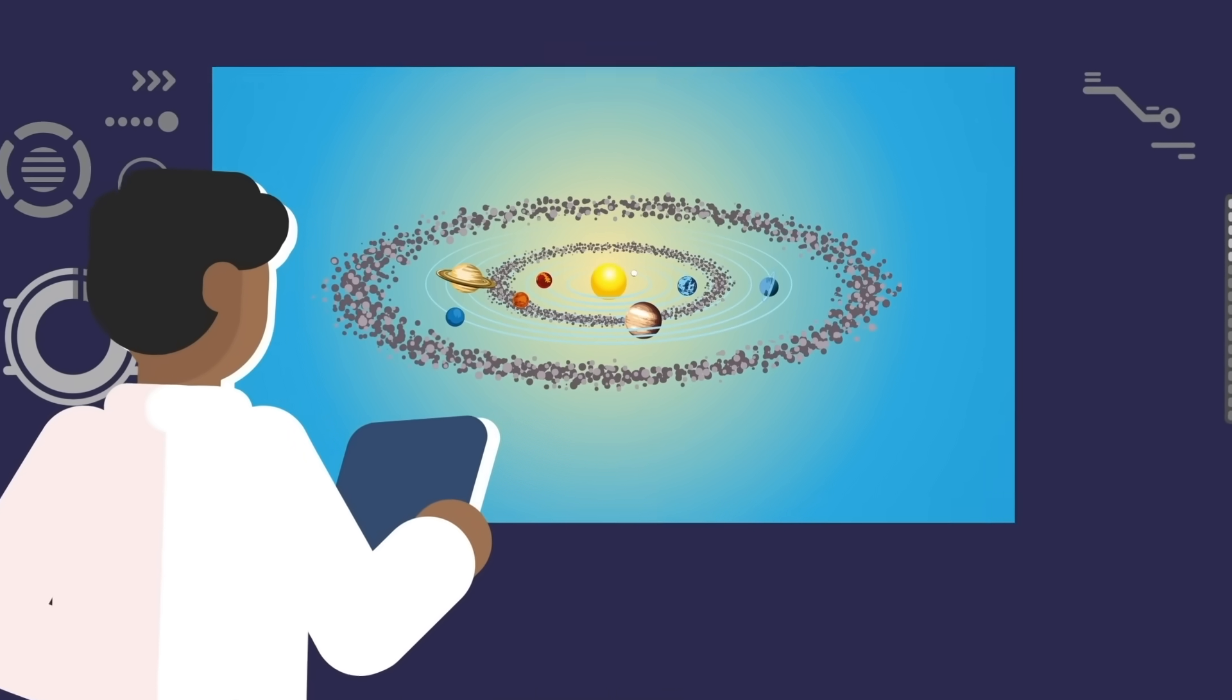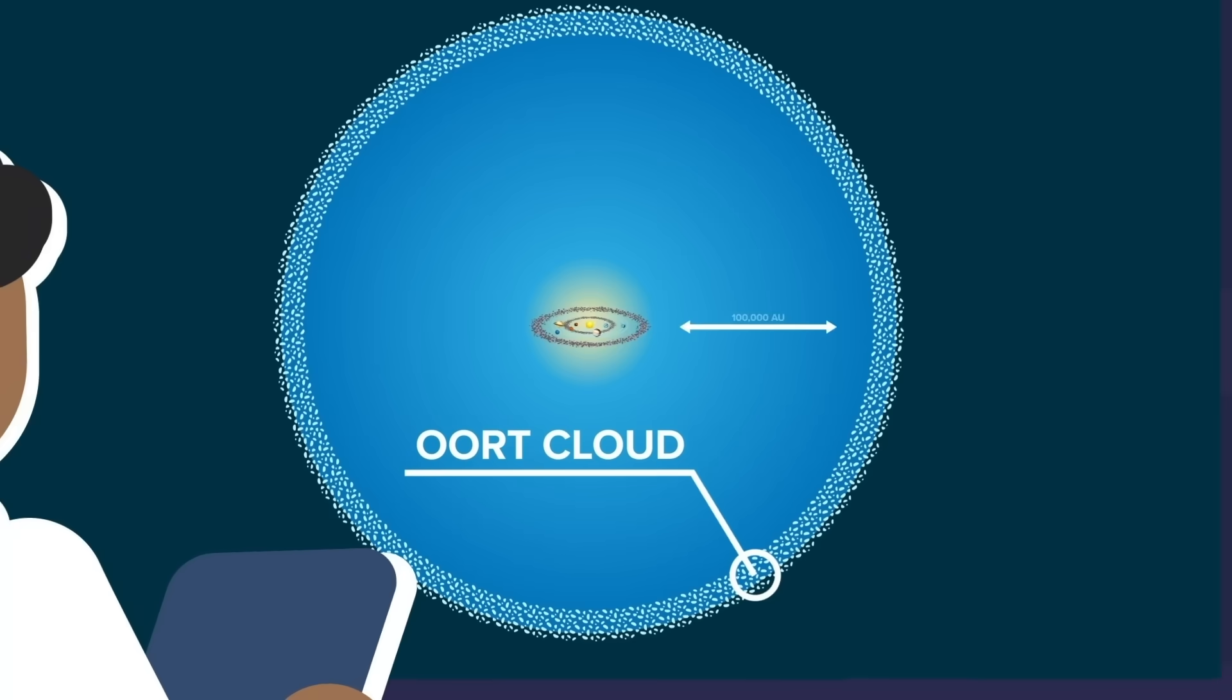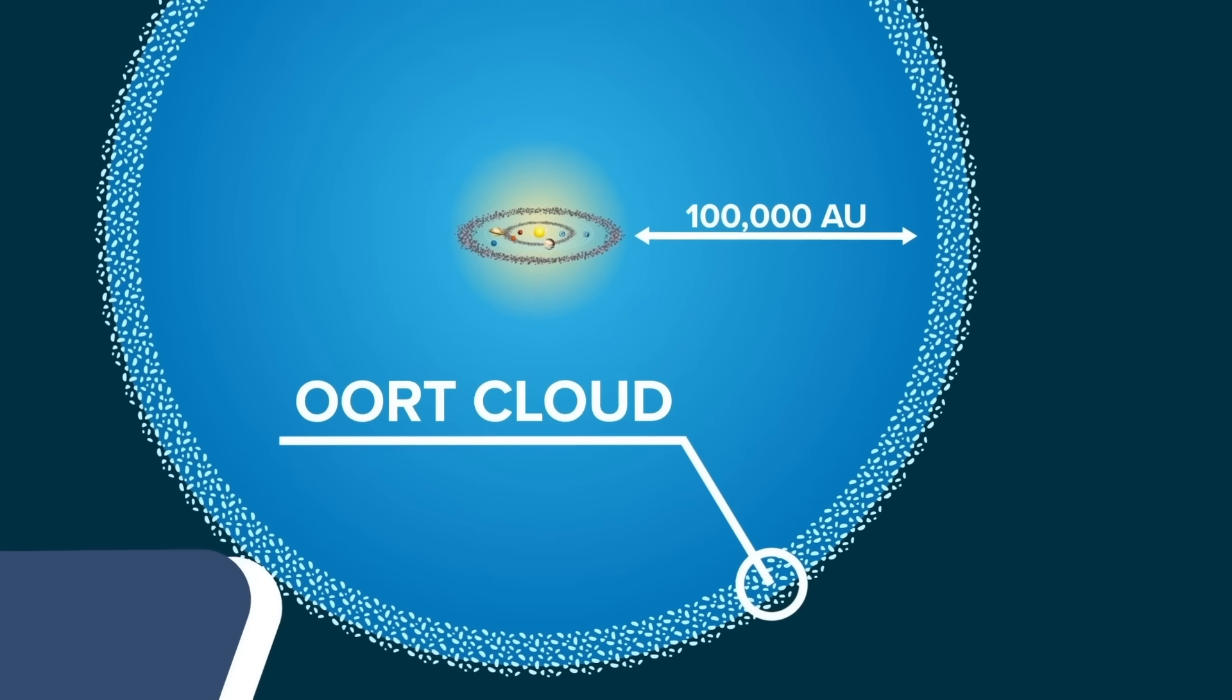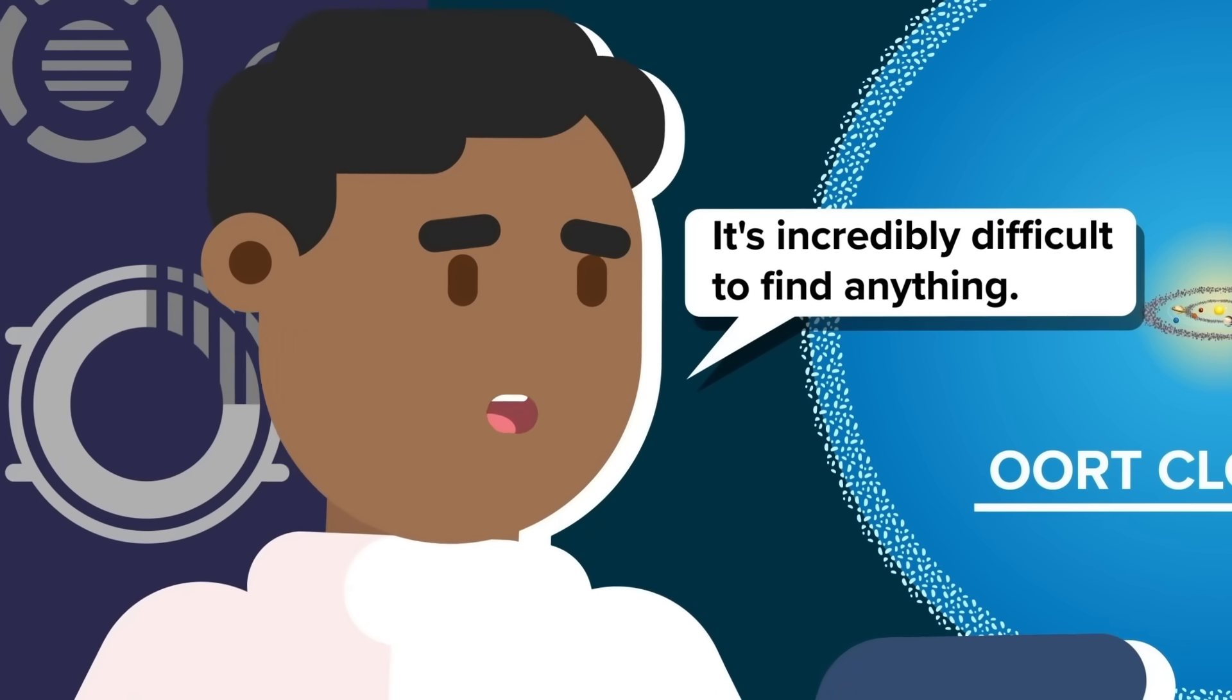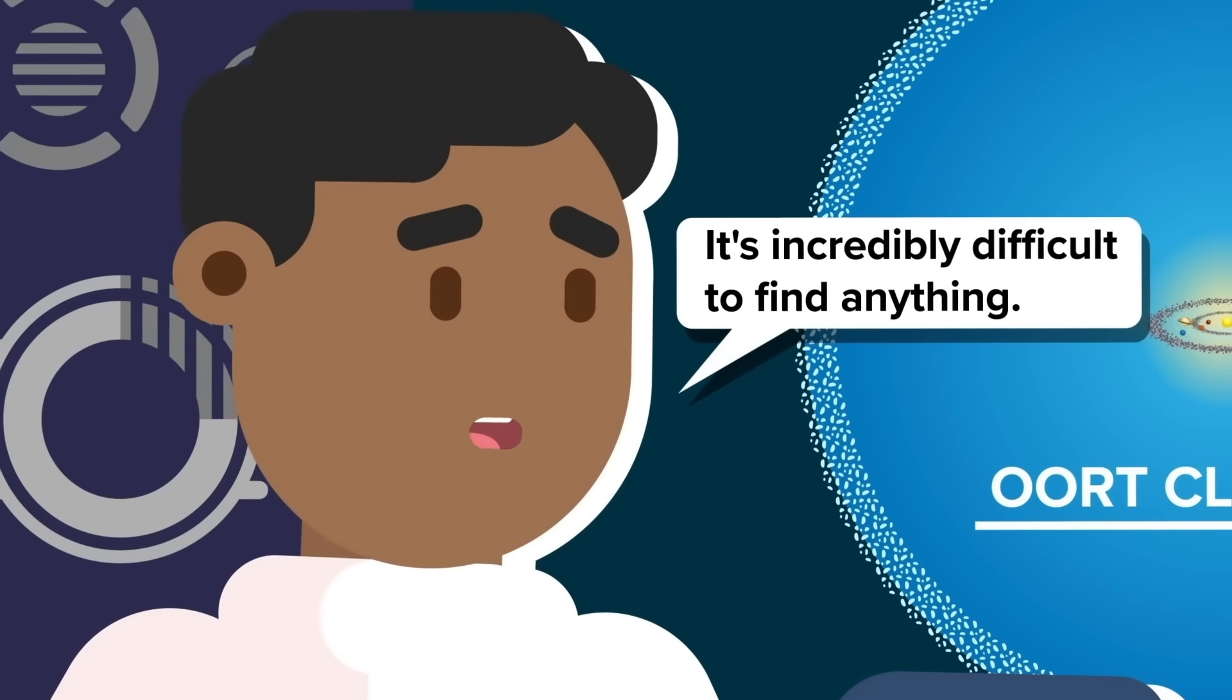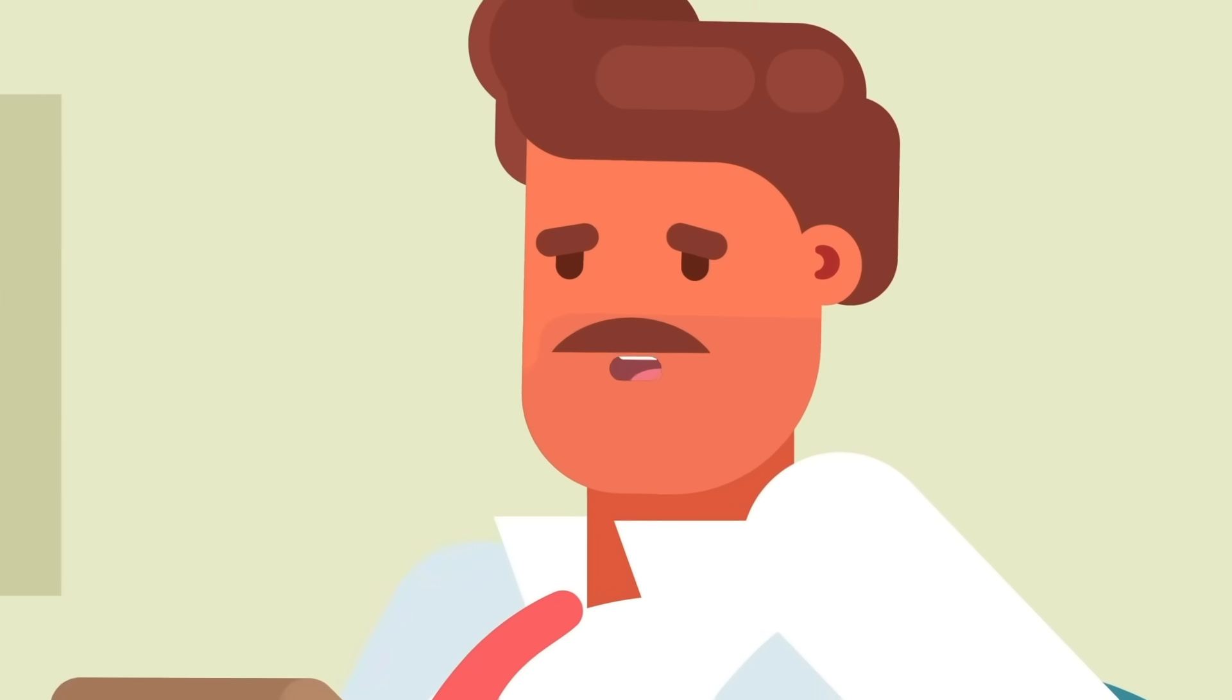But Neptune isn't the edge, because the Oort cloud, a region of frozen debris that surrounds the sun, stretches out as much as 100,000 AU away. At this scale, finding a single alien probe even the size of a building is like finding a half-eaten french fry hidden somewhere in the entire United States. But there are places we can look.